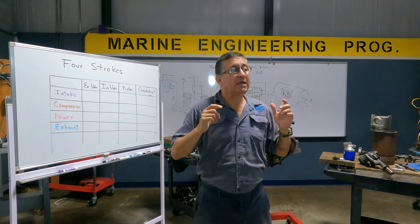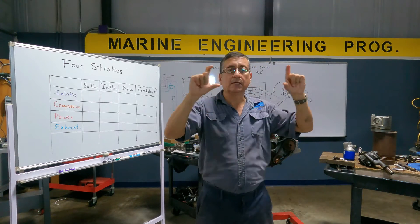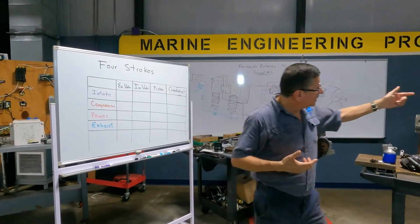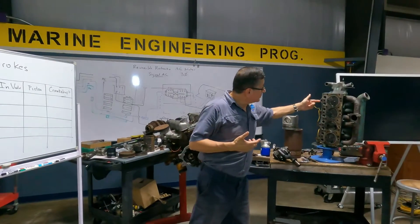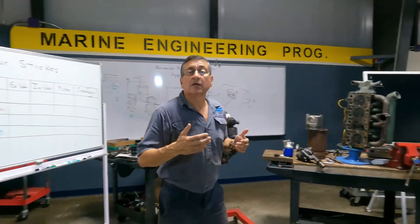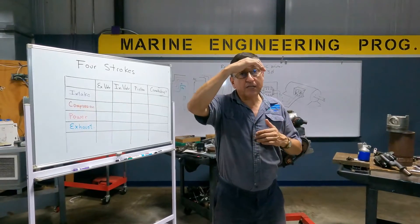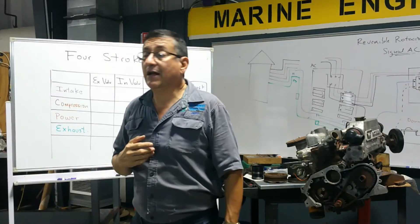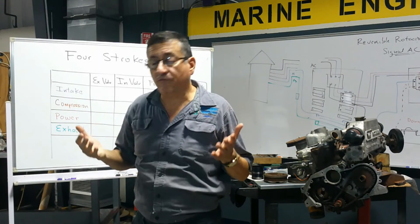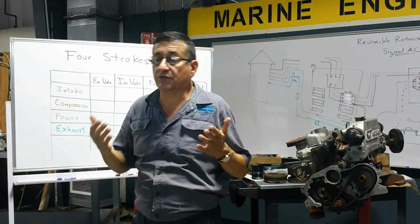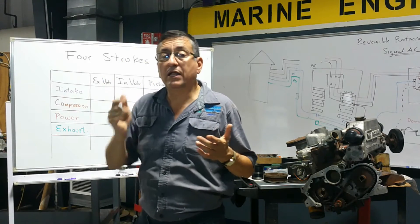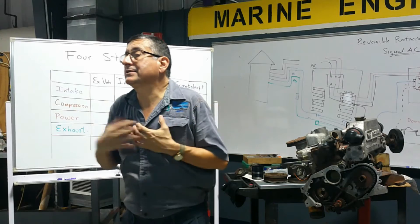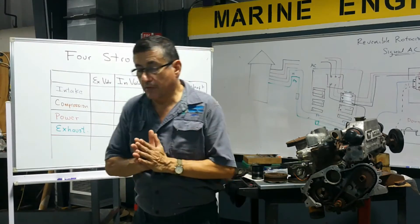Now the four strokes. Imagine the head. In the head, always, you have valves — intake valves and exhaust. In each cylinder you have intake valves and exhaust valves. How many intake valves, how many exhaust valves? It depends on the manufacturer. In some cases one-and-one, two-and-two, three-and-three — that's according to the manufacturer.